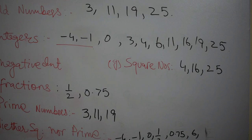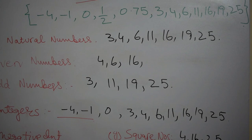And in the last, he is asking that it should be neither square nor prime. So we write here minus 4, minus 1, 0, half, 0.75 and 6, because these are neither square nor prime numbers. It ends up our first question.